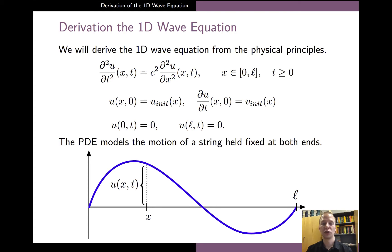We should also note that the wave equation has two separate initial conditions: one for the initial displacement of the string, and one for the initial velocity, which is given by the derivative of the displacement with respect to time. We need these two separate conditions due to the fact that the PDE includes the second order derivative with respect to time, as opposed to the heat equation, which only included the first order derivative with respect to time.